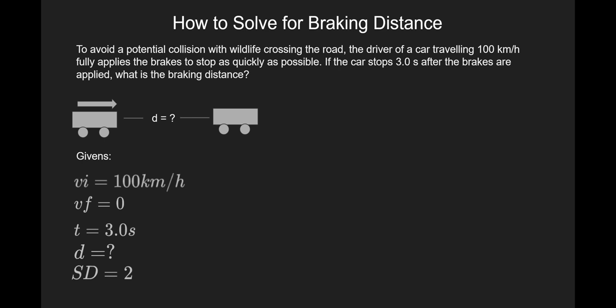Now when we reread the problem, if we look for the number with the lowest amount of significant digits, it's going to be our time, and that limits our answer to two significant digits.